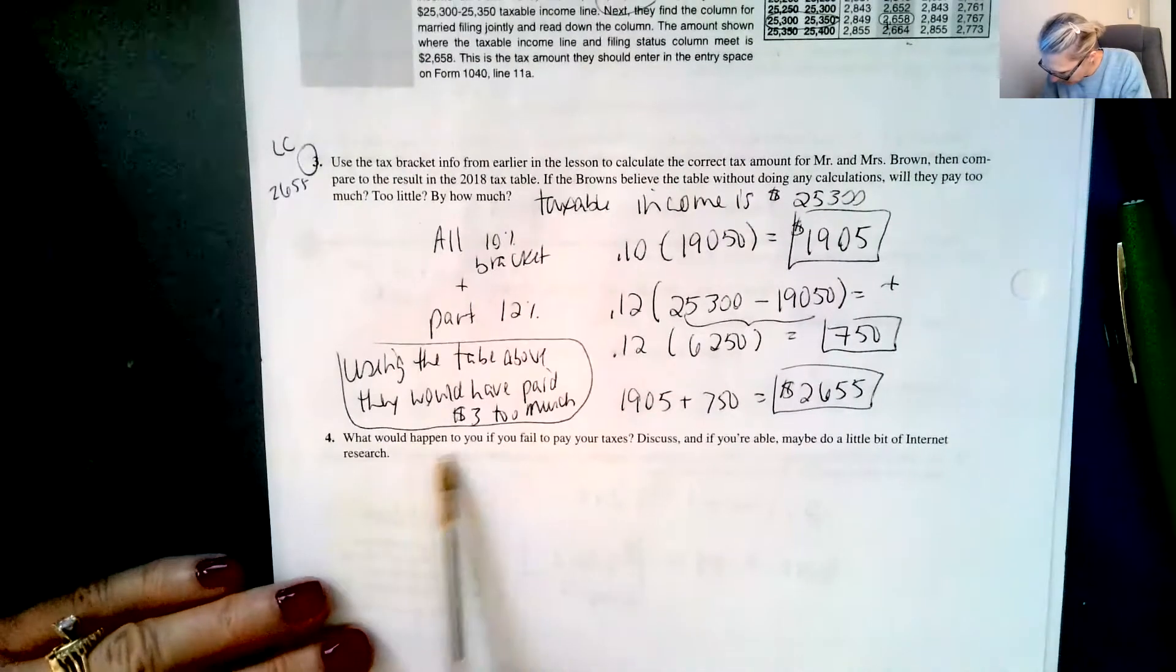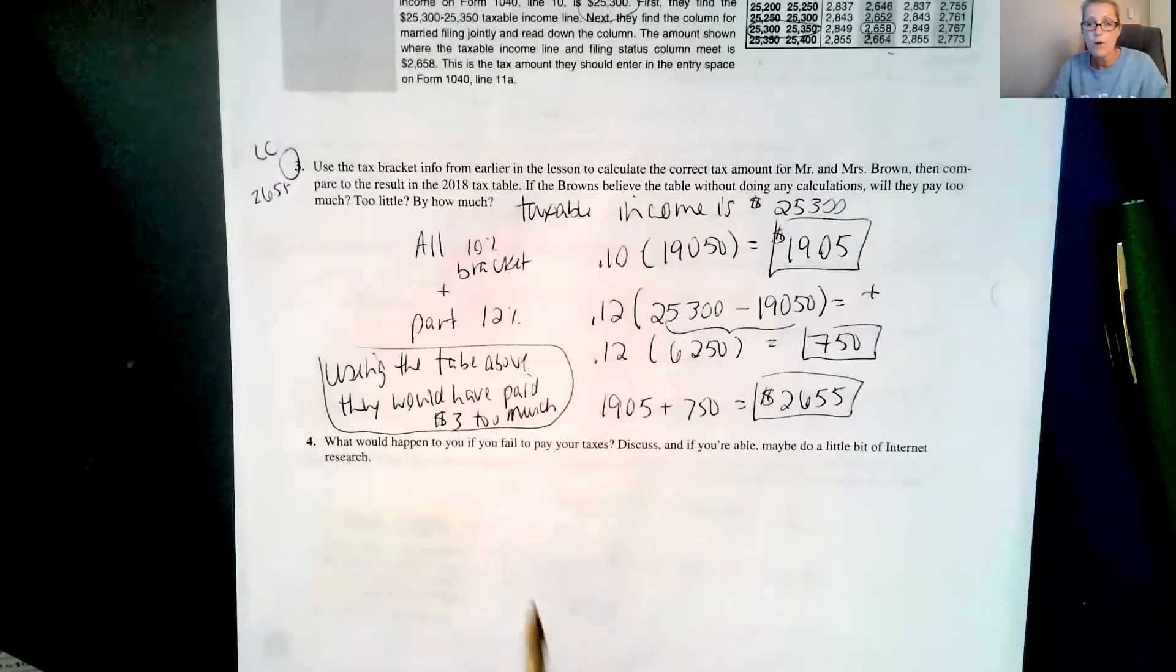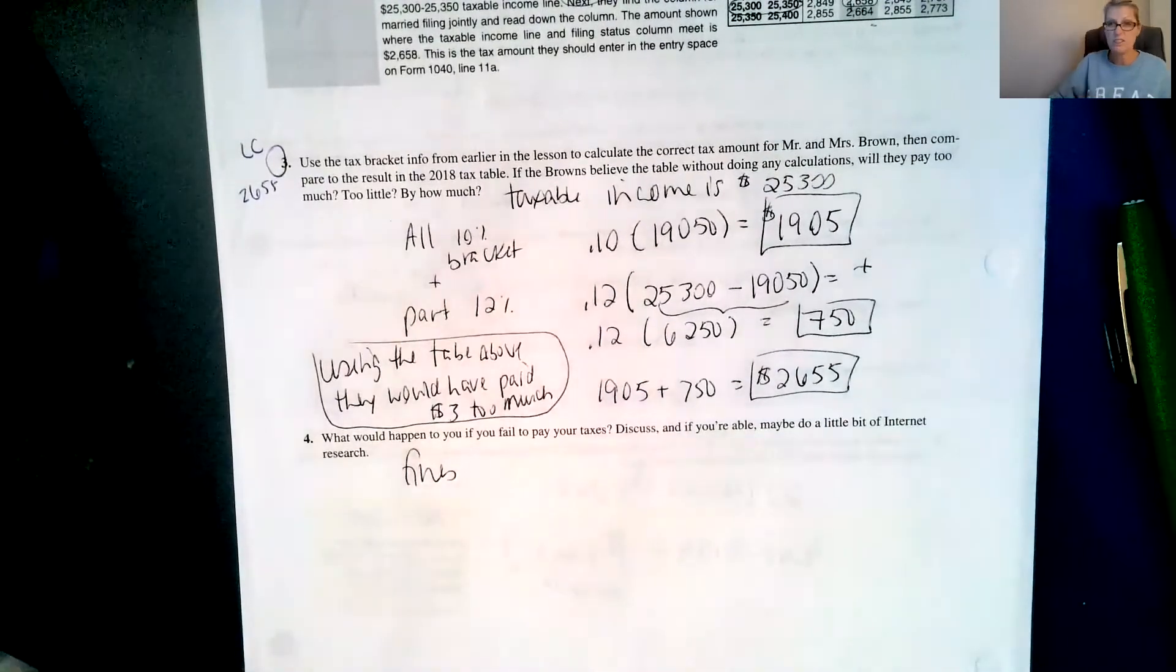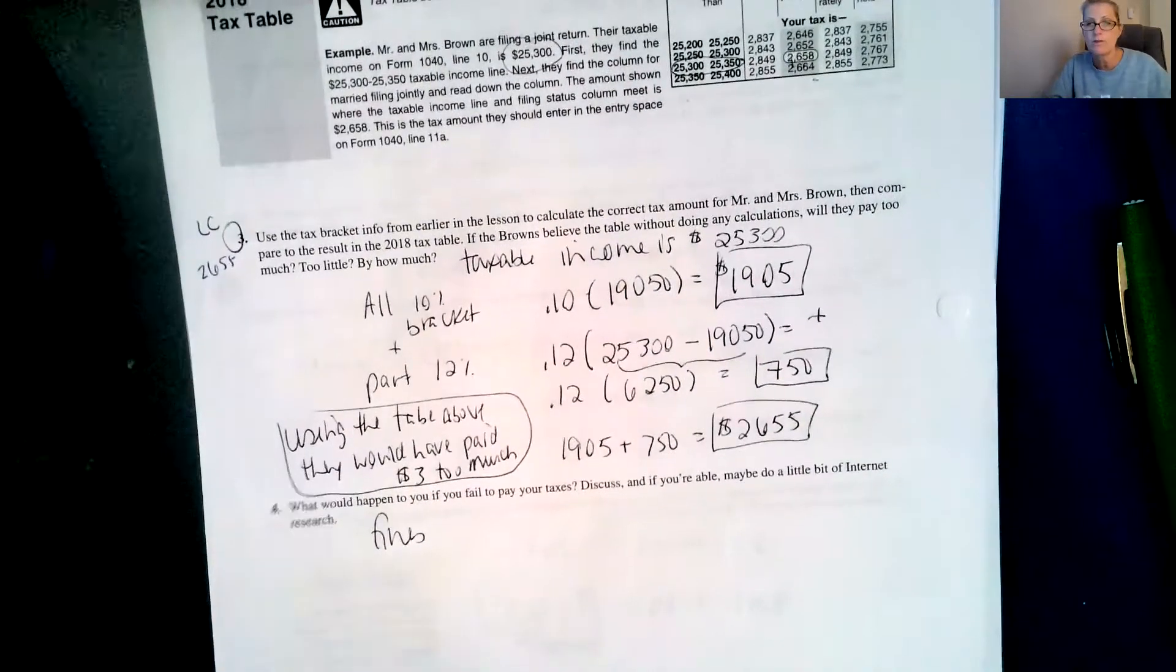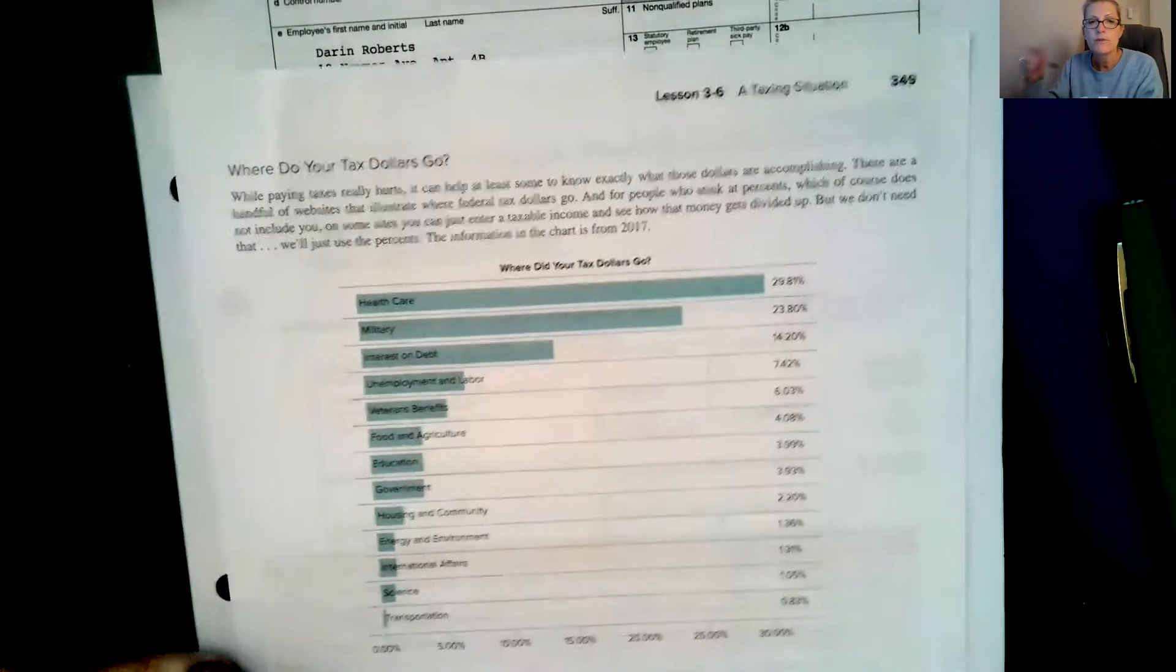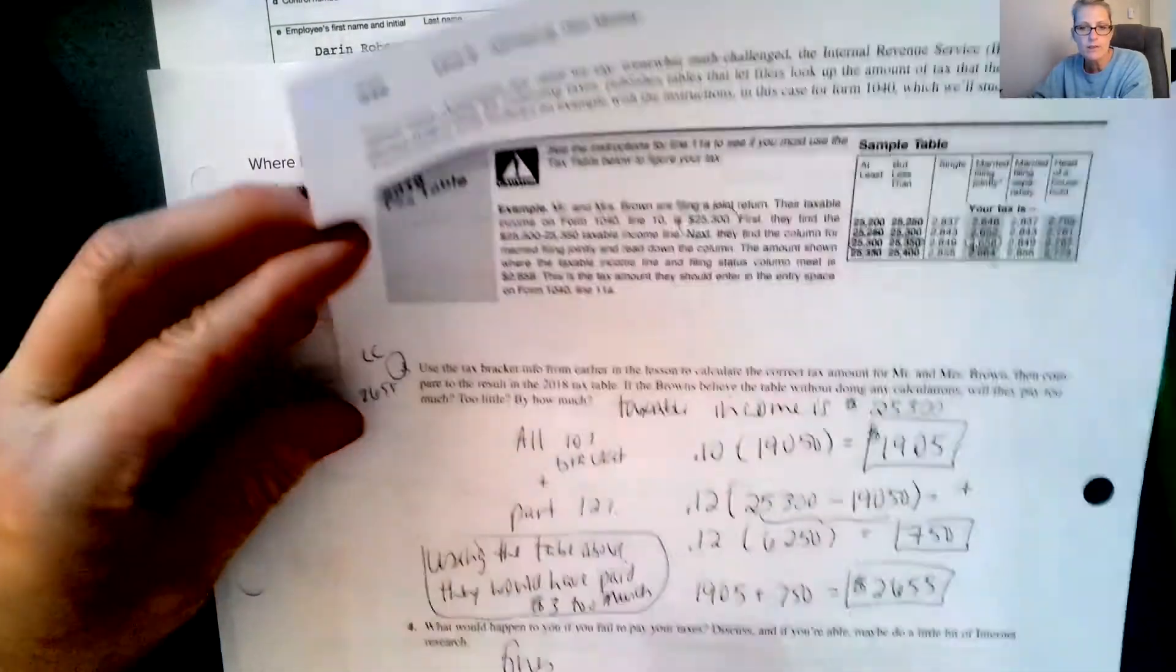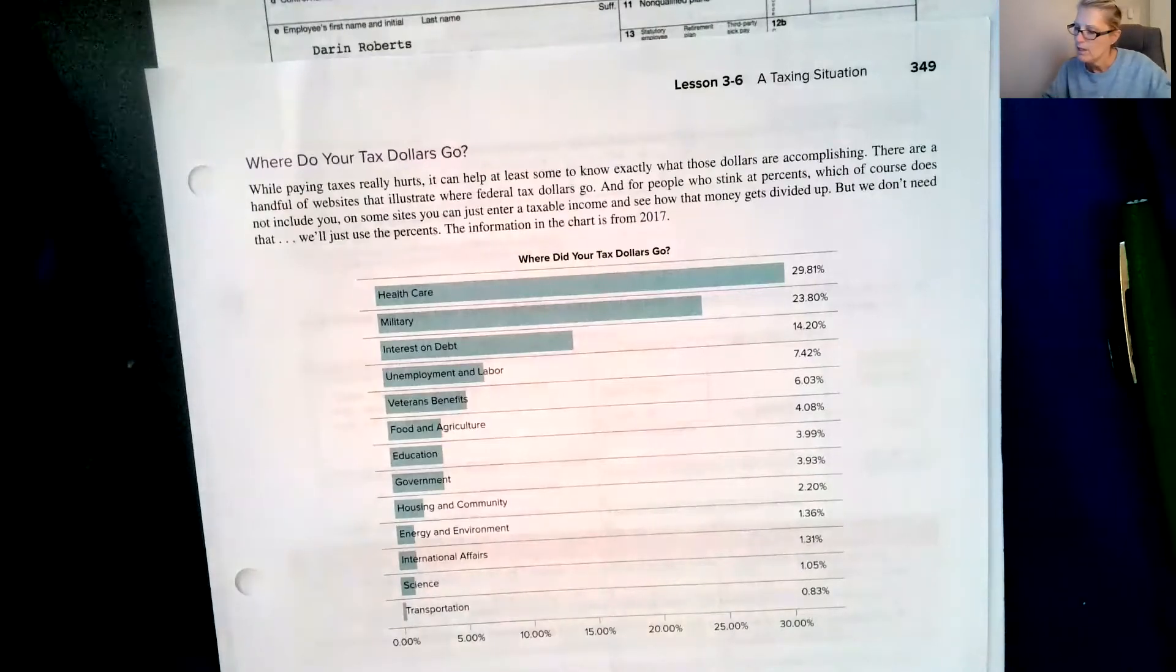So number four says, what would happen to you if you fail to pay your taxes? Discuss if you're able, maybe do a little bit of internet research. So if you don't pay your taxes, there are fines. I don't know if you can go to jail, I'm not sure. I know there's extensions you can get if you don't have money. If you actually owe more money than what you thought, you can file for an extension so that you have some extra time to pay that. And I want to make sure everybody knows that question three is a lesson check value, so it's $2,655. It's this right here is your lesson check, the last lesson check for unit three.